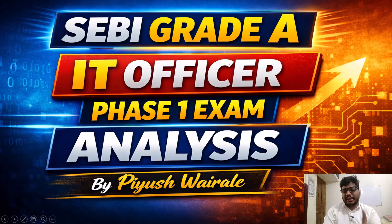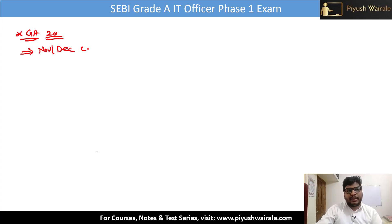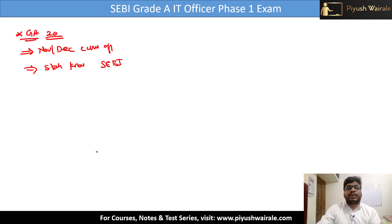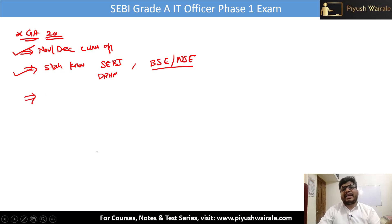Let us start with the general awareness topic. There were 20 questions. They focused more on November and December month current affairs. There were also a few questions based on static knowledge about SEBI — one question based on the DRHP and a few questions based on the Bombay Stock Exchange and NSE, around 2 to 3 questions on that.